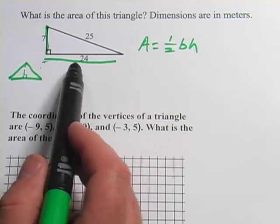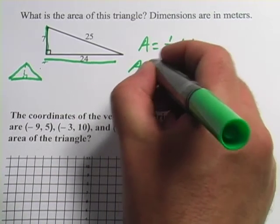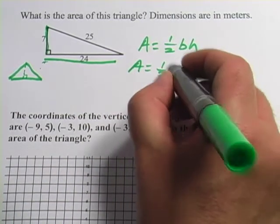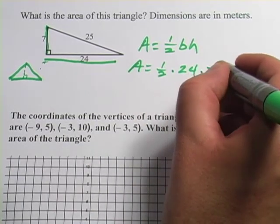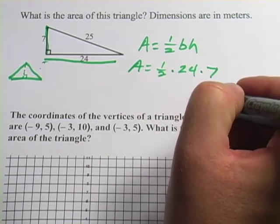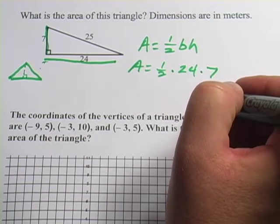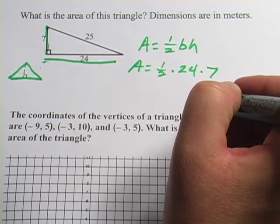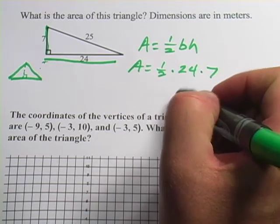So now we know what the base is and what the height is, all we have to do is plug it into the formula. So area equals one-half times the base is 24 times and the height is 7. And then you can plug that into your calculator. You could plug in .5 times 7 times 24 or you could say 24 times 7 divided by 2 because multiplying by one-half is the same as dividing by 2.